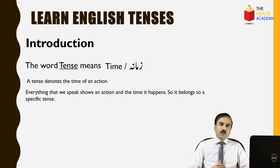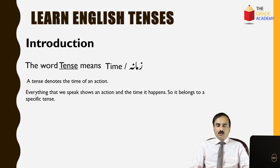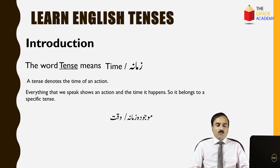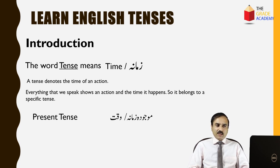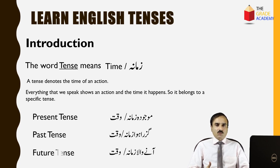तो जो कुछ भी हम अपनी daily conversation में बोल रहे होते हैं, वो किसी action को शो करता है या किसी action के time को शो करता है — कि कोई भी काम या action किस time पे हो रहा होता है। English में वक्त या जमाना तीन किस्म का होता है। मुज़ूदा जमाना को present tense कहते हैं, गुज़रा हुआ जमाना past tense कहलाता है, और आने वाले जमाने को future tense कहते हैं।